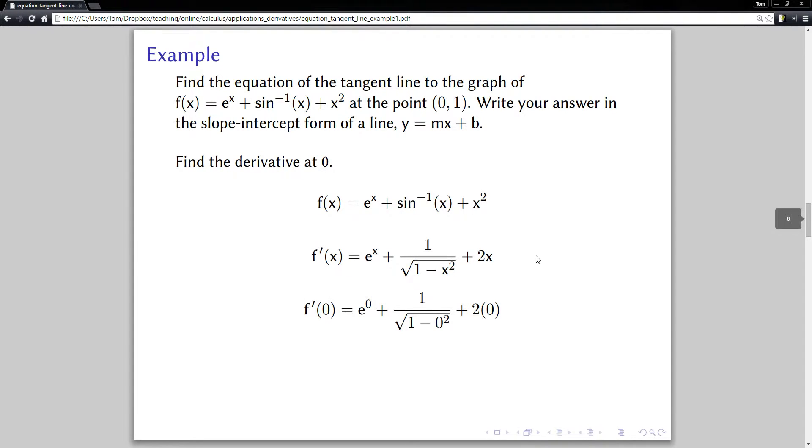And now we want to find the derivative at the number 0. So we would plug in 0 for x. And e^0 is 1. If I simplify this here in the middle, I get 1. And of course, that's 0. So I wind up with the derivative at 0 is equal to 2.